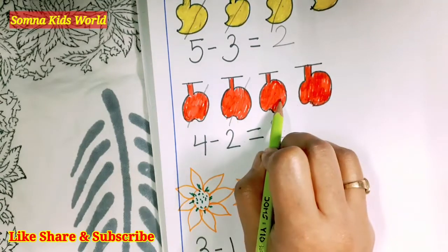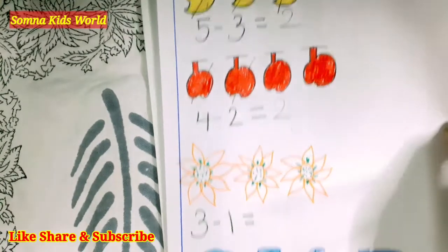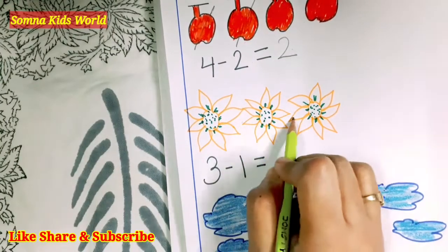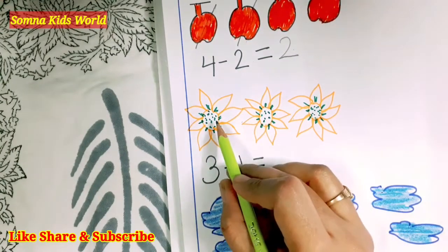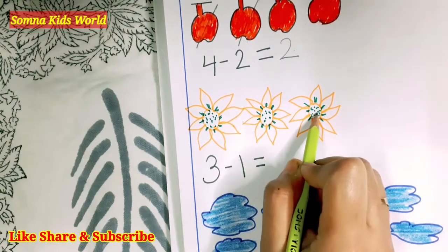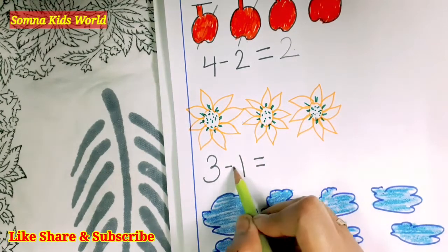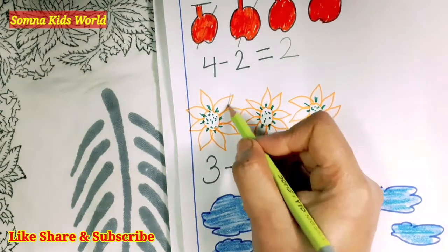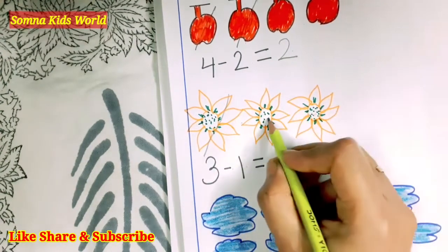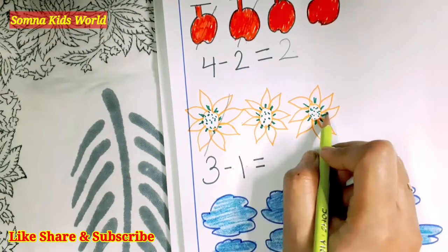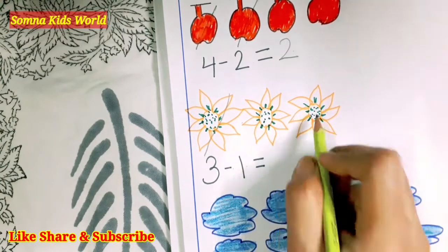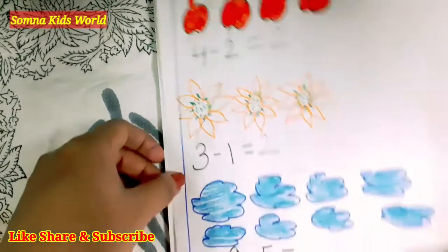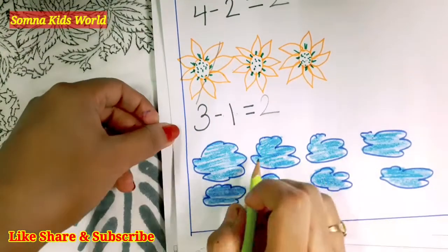Here, total how many flowers are we having? One, two, three. Now minus one flower — just cut one flower. How many are left? One, two — so three minus one is two.